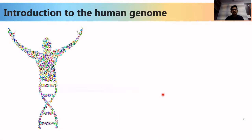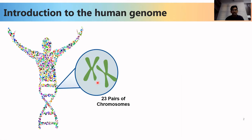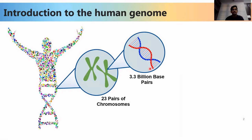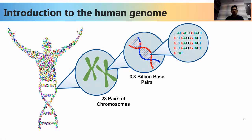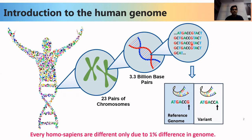Before going into these guidelines, let us understand about the human genome. The human body is made up of trillions of cells, and each cell contains 23 pairs of chromosomes. These 23 pairs of chromosomes are made up of 3.3 billion base pairs, encoded by adenine, thymine, guanine, and cytosine — ATGC. Any change in this 3.3 billion base pair from the reference genome is known as a variant. Every homo sapiens differs from each other by only 1% of this change in the base layer, which is why we all look different.